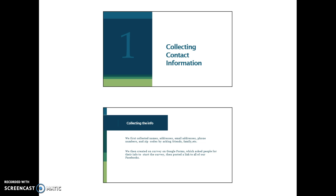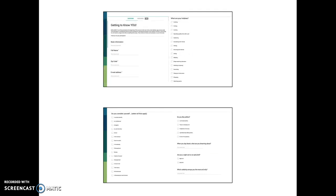The first phase was getting contact information, and they did this by asking friends, family, et cetera. They also did a survey on Google, asking people for their info to start the survey, then posted a link to all their Facebook friends. This was the survey, and they're asking about hobbies. By the way, they had to build a relational database with hobbies also linking back to the customers. So this is the survey that helped them get some more names and some more information.